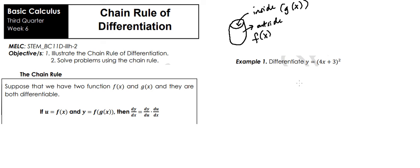But if you already know the basic rules, then let's answer this example number one. Our given is y equals quantity 4x plus 3 squared. Notice that we have the outside function.